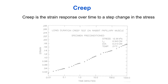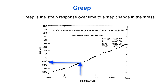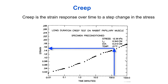Here we see the creep response in a cardiac muscle tissue preparation, where time after the step in stress is on a log scale on the x-axis, and strain is on the y-axis. In the first six seconds, the tissue strained by about four percent. By one minute, the strain was eight percent, and by two hours, it was up to 16 percent. This change in strain is all happening while the stress acting on the tissue is constant.